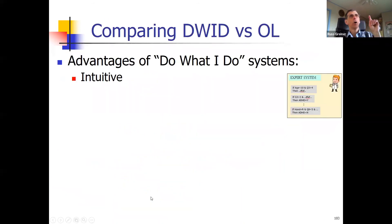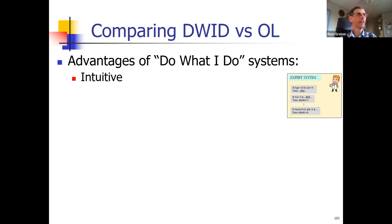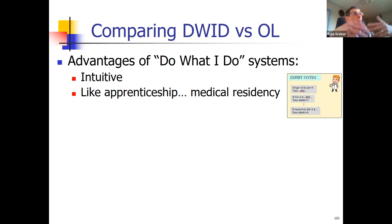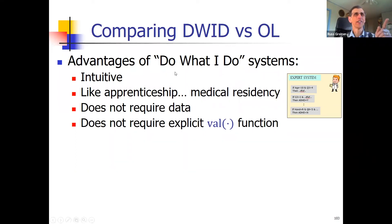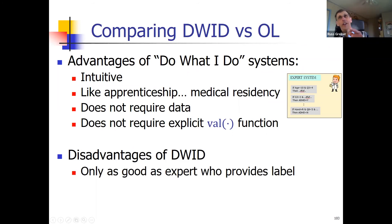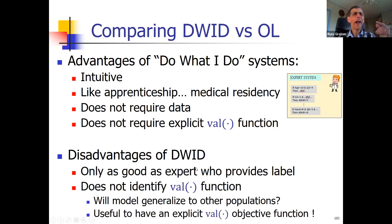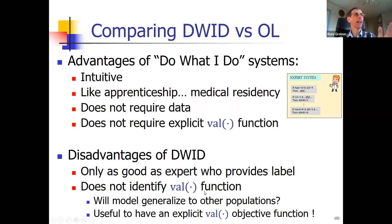Let me wrap up. I talked about 'do what I do' versus objective labels. Why are so many tools still being developed using 'do what I do'? It's very intuitive — this is how doctors are trained; they follow another doctor in an apprenticeship and try to learn what the master did. It doesn't require data, just the expert's opinion. It doesn't require an explicit valuation function, and not one of the doctors I've talked to can tell me their value function. On the other hand, it's only as good as the expert, and experts may not be perfect. The valuation function is actually critical — what are you trying to do?